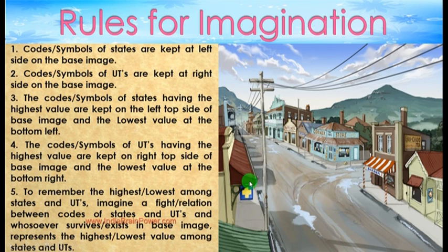The code symbols of the utilities having the highest value are kept on the top right side of the base image, and the lowest value at the bottom right.